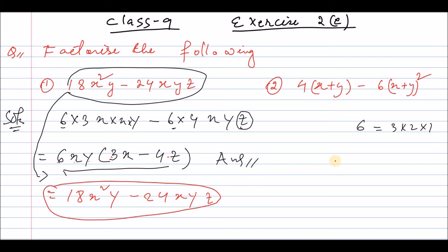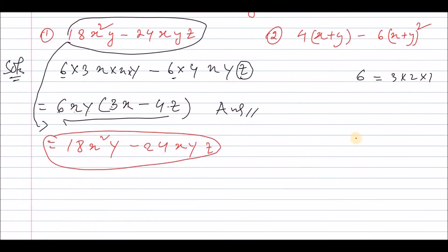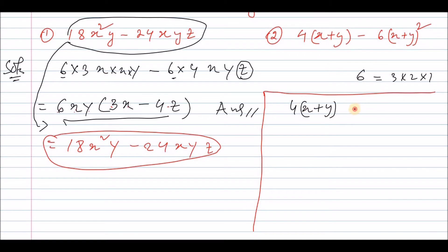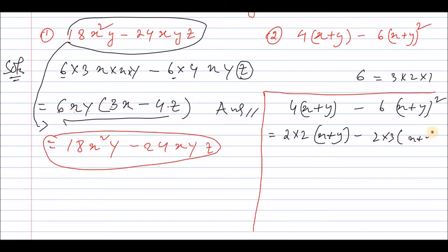Question number 2: factorize 4(x + y) minus 6(x + y)². We take 2(x + y) as the common factor — that gives us 2 into 2 minus 3(x + y), from x plus y minus 2 into 3(x + y) whole square.